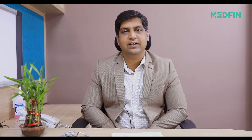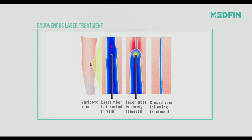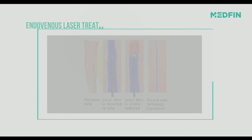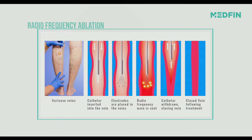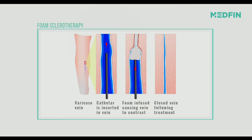Laser and radiofrequency ablation use essentially the same technique to close the varicose vein. A small needle is inserted and either a laser fiber or an RFA fiber is passed into the varicose vein. Using thermal energy, the vein is closed and the fiber is pulled out. Sclerotherapy uses a foam agent — an irritant injected into the vein that damages the endothelium and closes off the varicose vein.